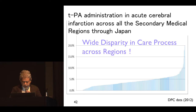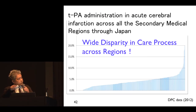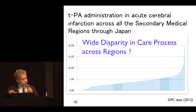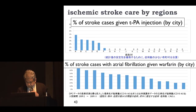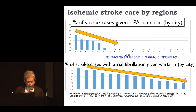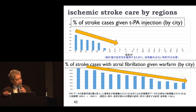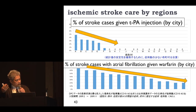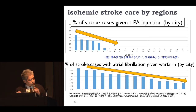At the national level, looking at TPA administration across all secondary medical regions in Japan, in some areas patients did not receive TPA at all. When we looked into smaller regions, there is also wide variation. For example, for ischemic stroke with atrial fibrillation, warfarin given for prevention of ischemic stroke also shows wide variation among regions — in some areas warfarin is given, but in others it is not.